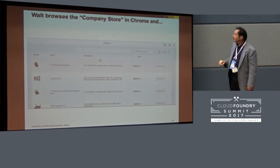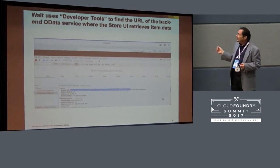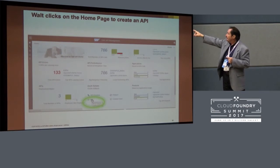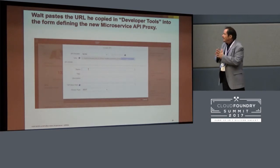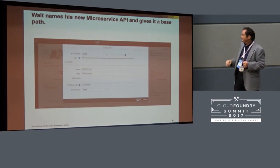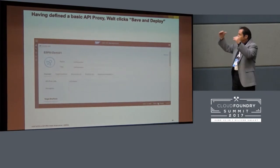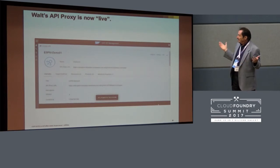What he can do now is go to the company store, browse it in Chrome, and click on developer tools. Now he can look and find where that thing is getting its back-end data about these devices. He copies the URL, goes back to the home page, and says 'create API.' He pastes the URL and creates a base path in the API. He clicks once and now he's got a basic API proxy — he's come in between the back-end and the internet. When he clicks save and deploy, he's got a live proxy.